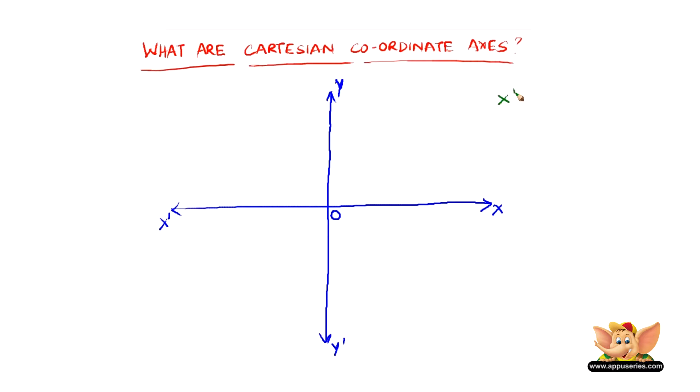Now here, the line x-ox is called the x-axis and the line y-oy is called the y-axis.